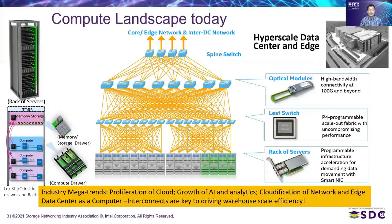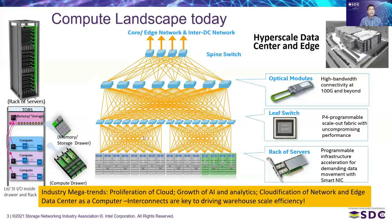Each server in this node connects to the networking fabric through a NIC. Increasingly, smart NICs are being deployed to offload the compute complex with networking and infrastructure tasks. The fundamental challenge is to treat the data center as a computer. Whether it is compute, memory, storage or any other resource, we have to get to warehouse scale efficiency. With the proper interconnect infrastructure, we can move resources or tasks seamlessly and securely, resulting in better power efficiency, better performance, and better total cost of ownership. We are making good strides but still have a long way to go.